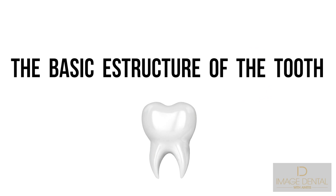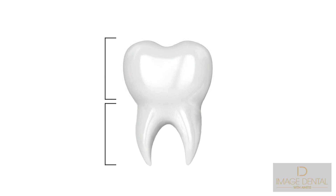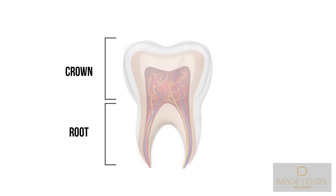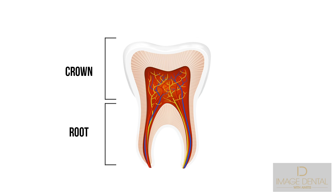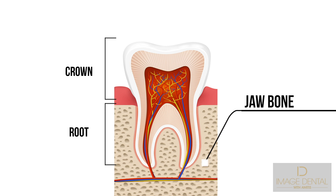To understand what a root canal is, we will show you the basic structure of the tooth. A tooth has two primary sections: the crown section and the root section. The crown is the portion of the tooth that is visible above the gum, and the root is the section of the tooth that is inside the jawbone.